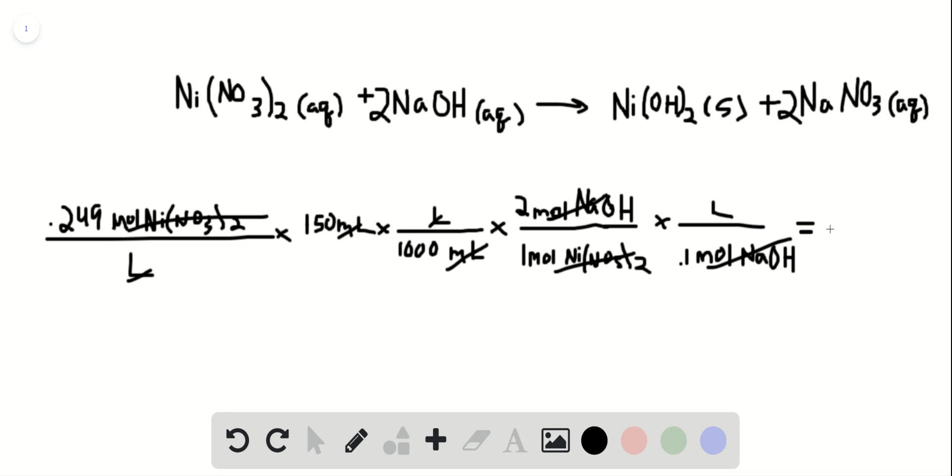And if you were to multiply this all out, you would get an answer of 0.747, or quickly multiplying that by 1,000 would be 747 milliliters.